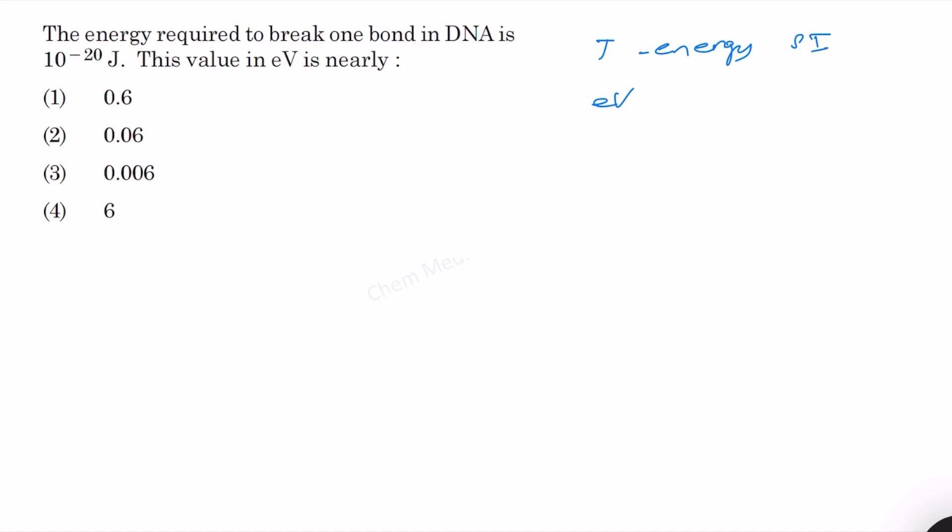We also know that one electron volt is equal to 1.6022 times 10 to the power minus 19 joules.